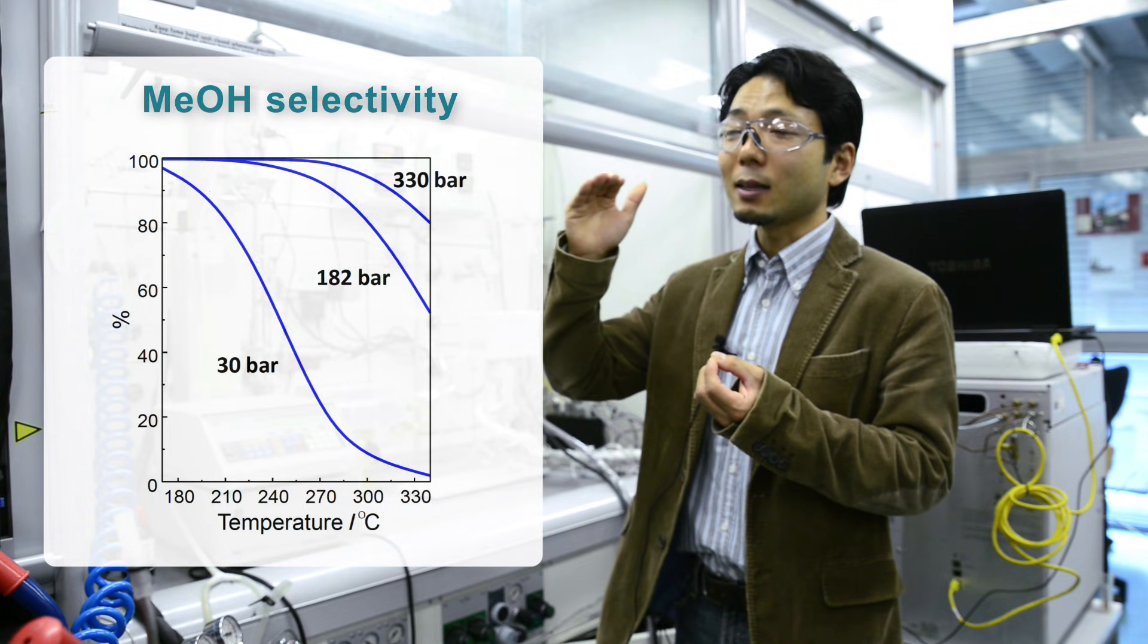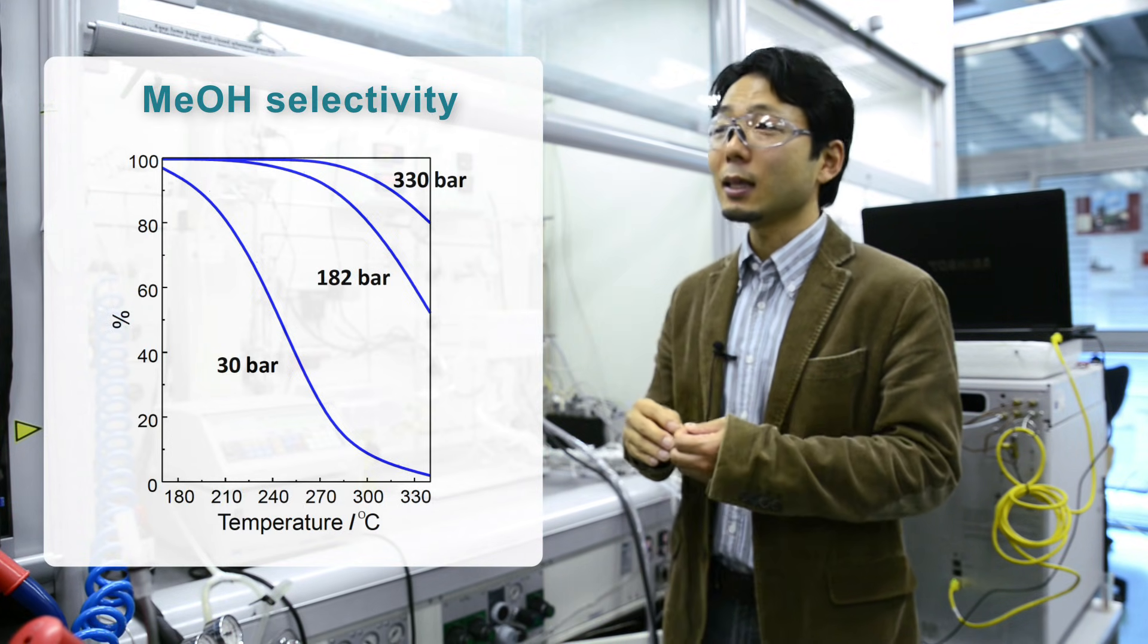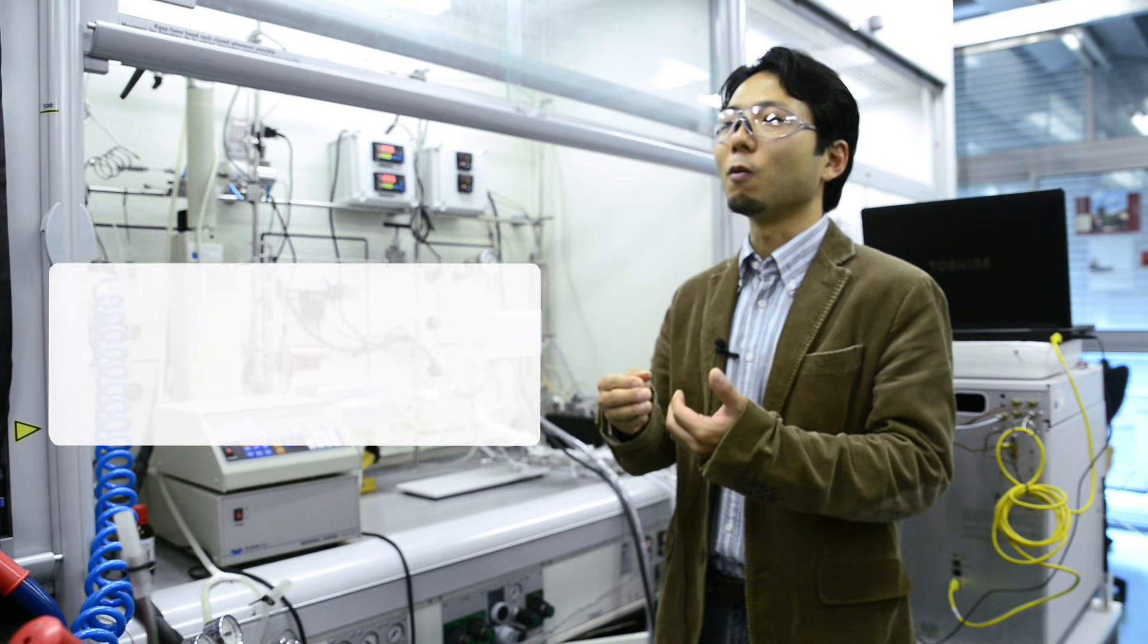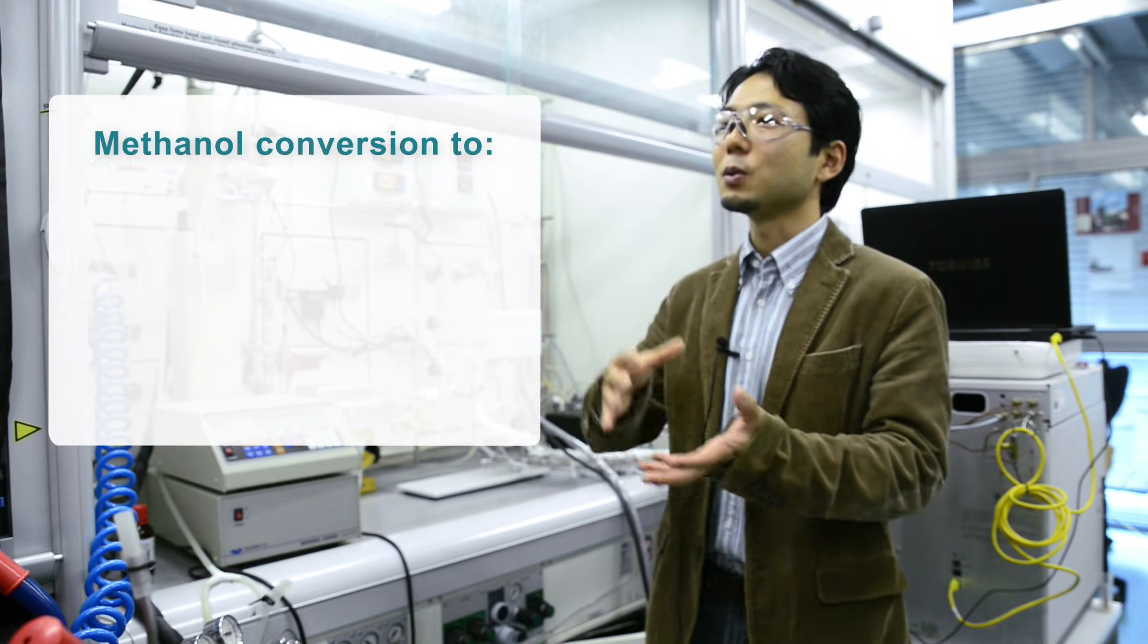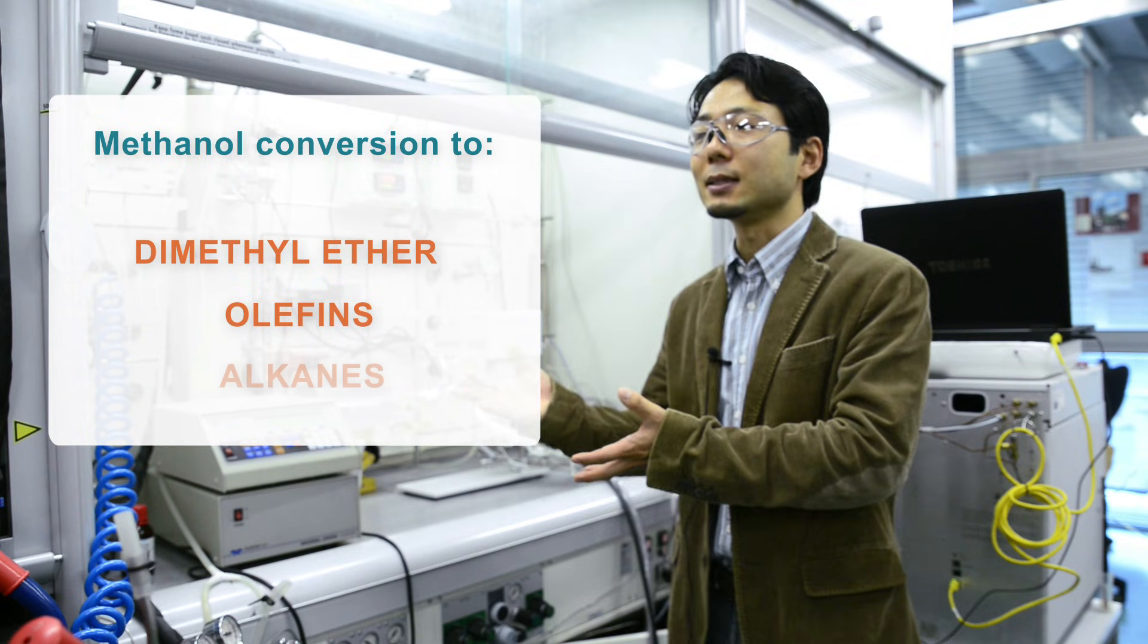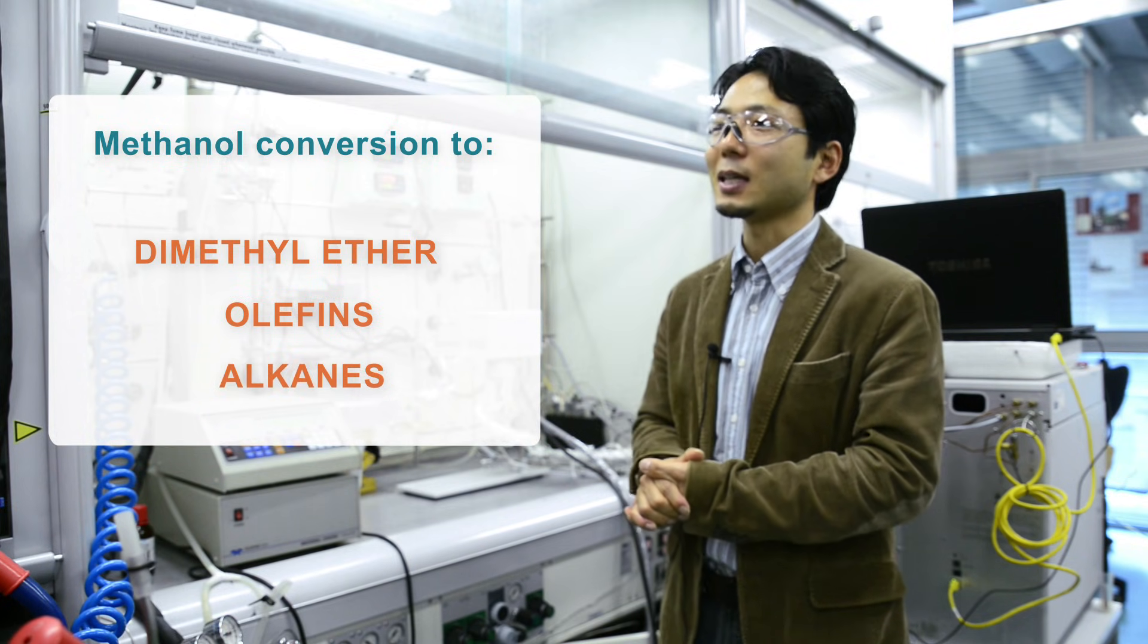By that, what I mean is, we could achieve 95% conversion above that of CO2, and selectivity over 98% to methanol. And also in this reaction, we produce water as by-product, and we just pass this methanol and water-rich stream to another reactor. And we could also show that we could convert methanol to dimethyl ether, or methanol to olefins or alkanes. This is something we could show using this high pressure approach.